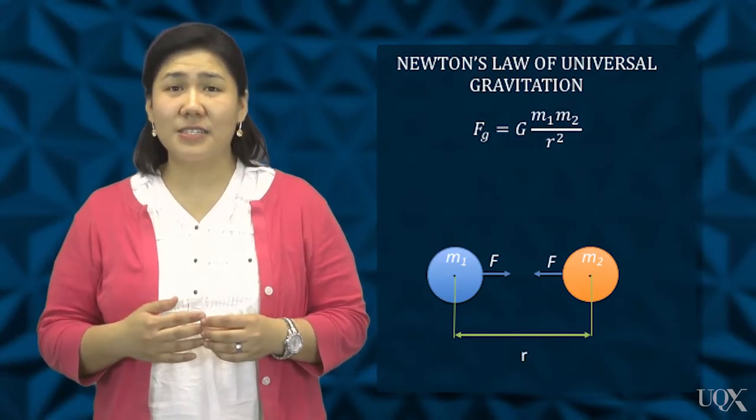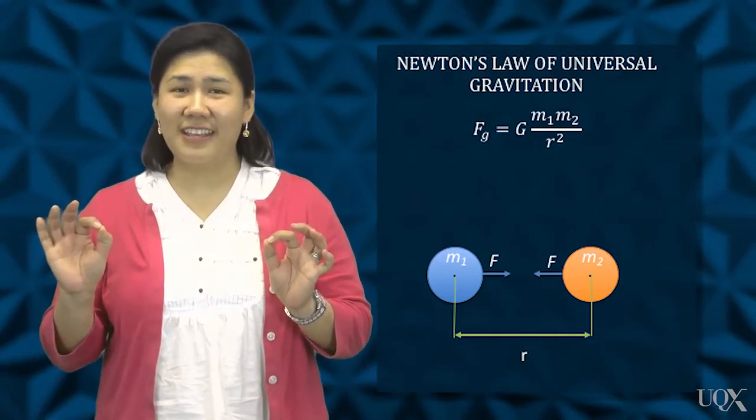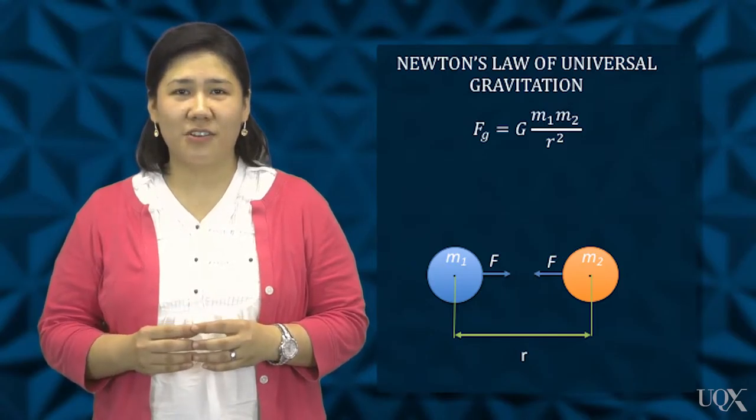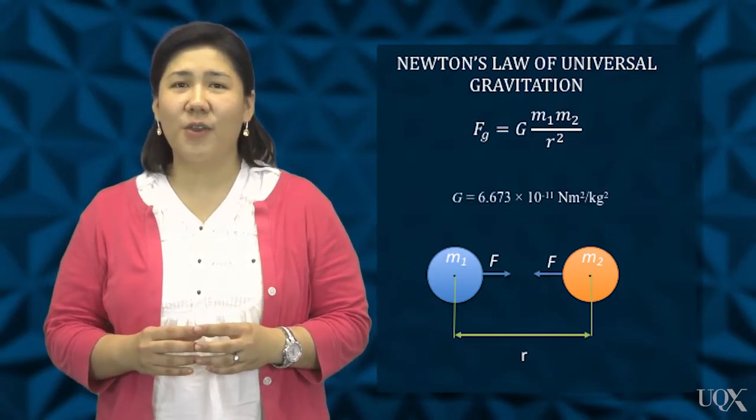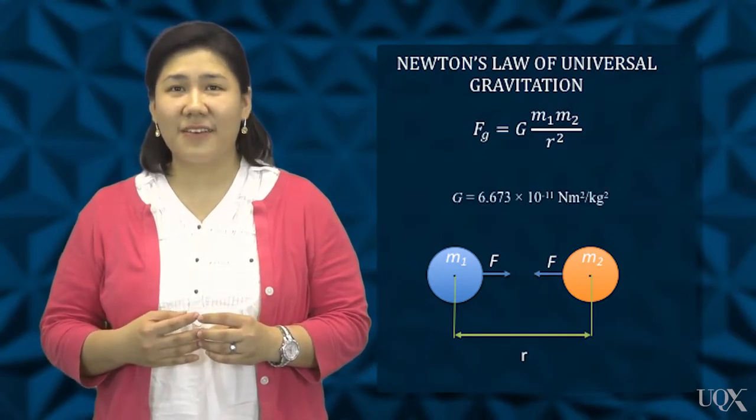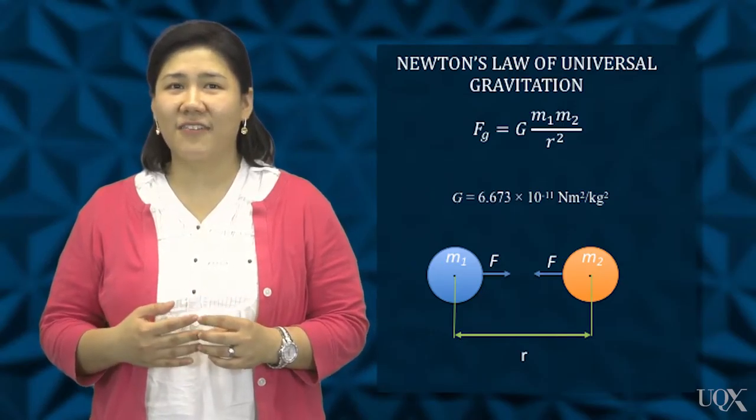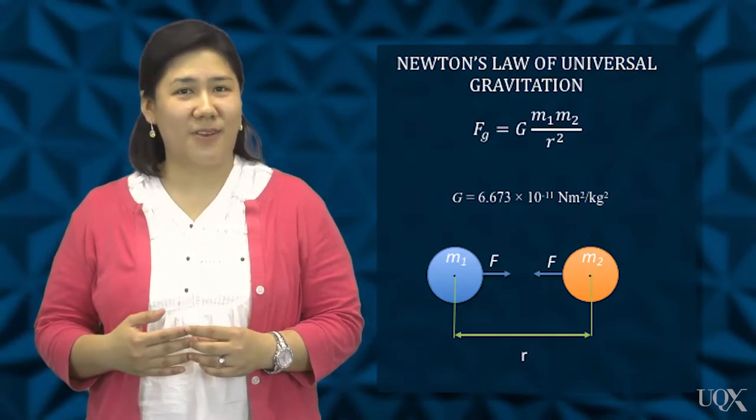r is the distance between the centers of mass of the bodies. G is the universal gravitational constant, which has a current accepted value of 6.673 times 10 to the negative 11 newton meters squared per kilogram squared.